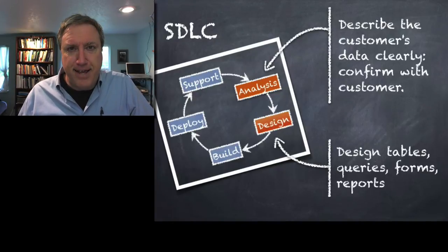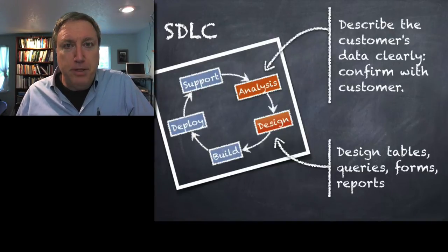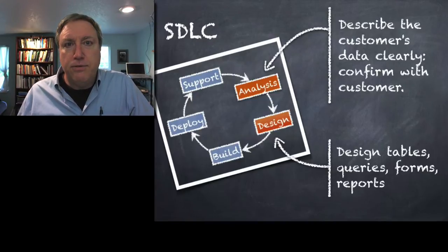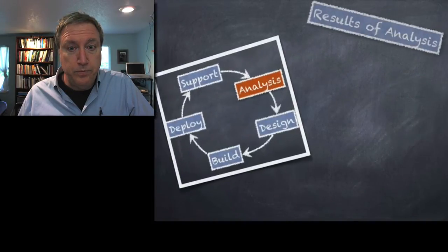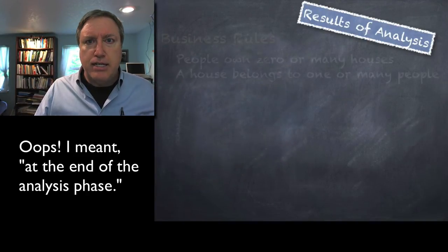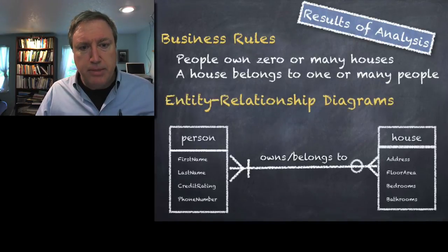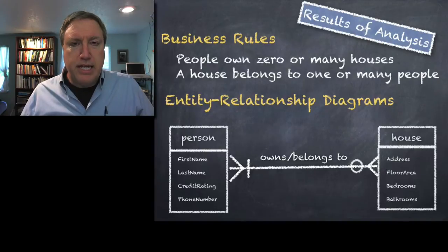Now in the design phase, we're going to design the tables, the queries, the forms, and the reports that we need to implement a system that delivers the information that the customer wants — that captures the data that they have and delivers the information they want. So at the end of the design phase, what we're left with are a set of business rules that describe the data and entity relationship diagrams that allow us to have a visual representation of those business rules.